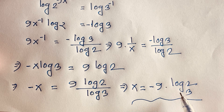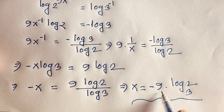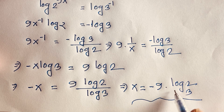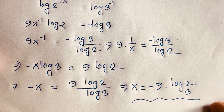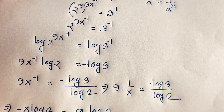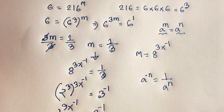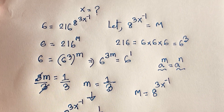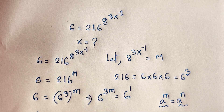So x is equal to minus 9 times log 2 base 3. This is our final answer for this engineering maths question. Thank you all — if you enjoyed this video, subscribe to my channel for more interesting videos. Goodbye, take care.